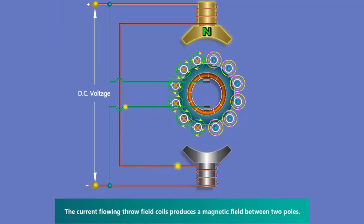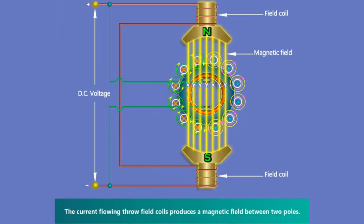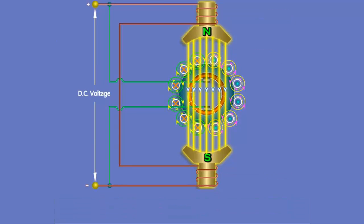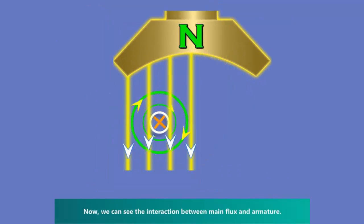The current flowing through the field coil produces a magnetic field between two poles. Now, we can see the interaction between armature and main flux.